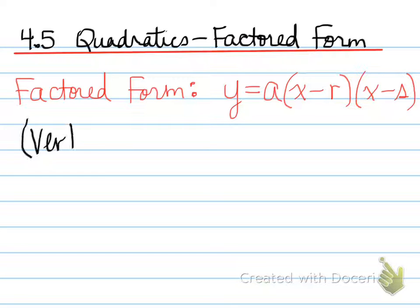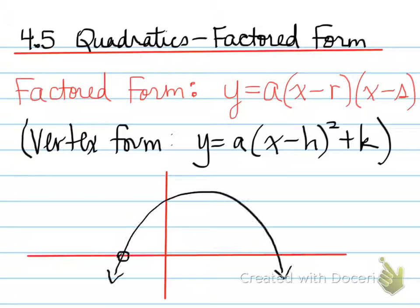And in this factored form, it's different from the vertex form in the sense that in factored form we're looking at not the vertex, but we're looking at the two roots, the zeros, or the x-intercepts where the graph crosses the x-axis.